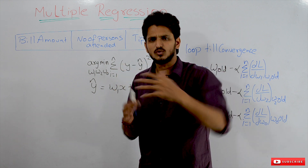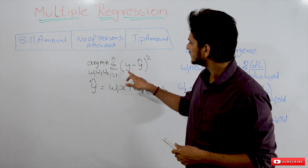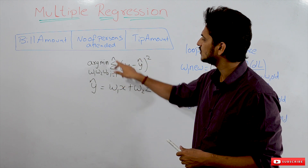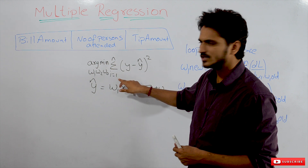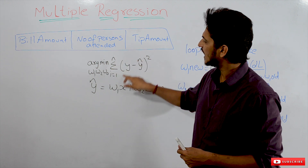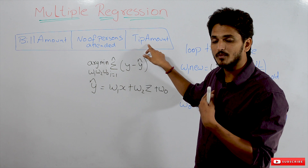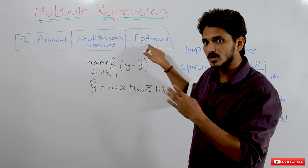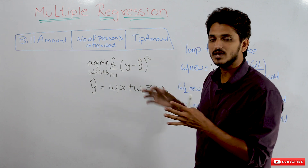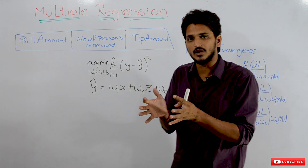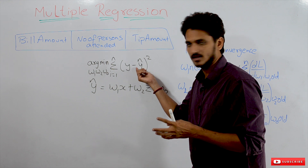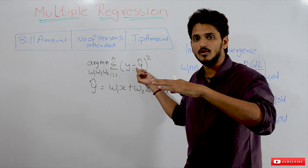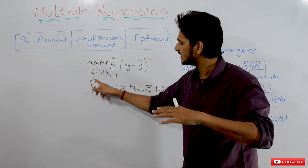Our loss function is: σ(y - ŷ)² for i = 1 to n — identify the loss for all data points and sum them up. Here, y means the actual tip amount collected, and ŷ means the predicted tip amount, which we predict based on the plane.